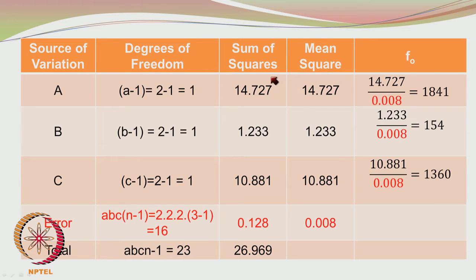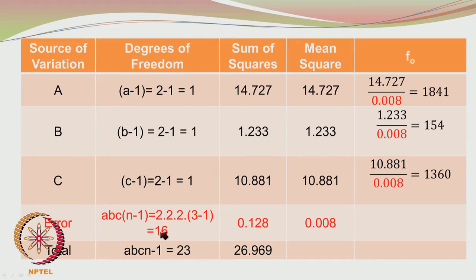The sum of squares due to A is 14.727, B is 1.233, C is 10.881, and error is 0.128. The mean square is obtained by dividing the sum of squares by the degrees of freedom. Since each effect has 1 degree of freedom, the mean squares equal the sum of squares: 14.727, 1.233, and 10.881. For the error, 0.128 divided by 16 gives 0.008. The total is 26.969.